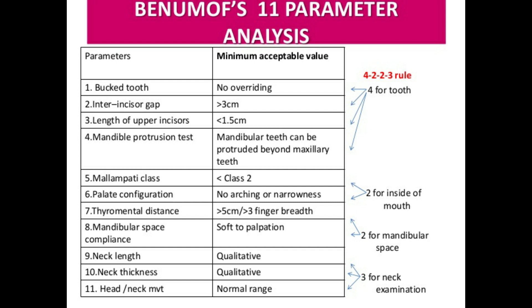Penmorph's 11-parameter analysis is a stepwise airway examination that follows the line of sight from the upper incisor to the glottis. Four steps focus on teeth: interincisor gap, presence of buck teeth, length of upper incisors, and mandible protrusion. Two for inside the mouth: Mallampati grading and palate configuration. Two for the mandibular space: mandibular space compliance and thyromental distance. Three steps in neck examination: neck length, neck thickness, and head and neck movements.